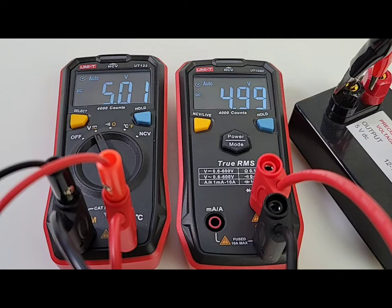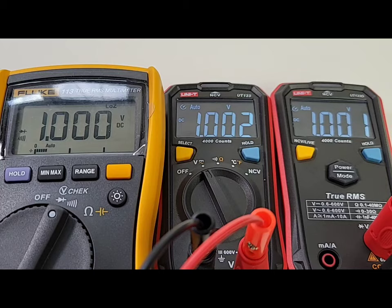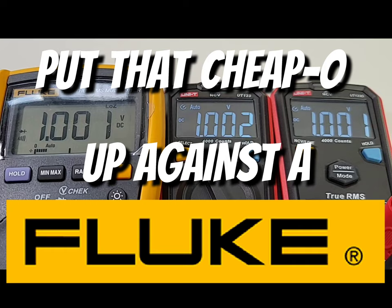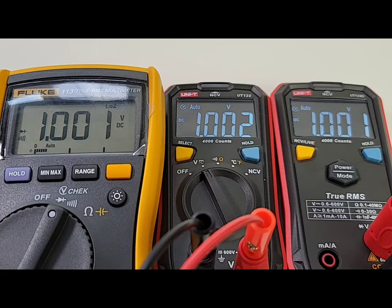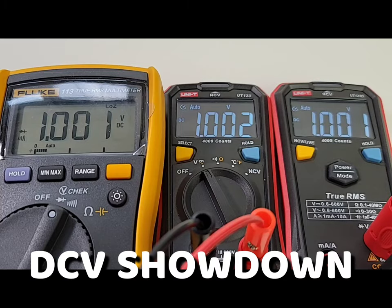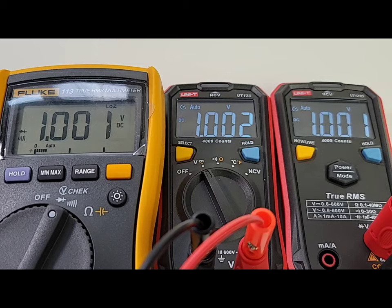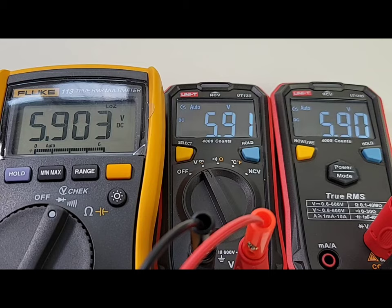Quick voltage showdown. I will put it up against a Fluke today. We have another smart meter, the Fluke 113, which I will be reviewing shortly. All sitting right now at 1.00 volts. We're gonna take it up: 5.90 volts. 5.90 spot on for Mr. 123D, the star of the show on the far right. 5.91 for the 123 in the middle and 5.90 for the Fluke.